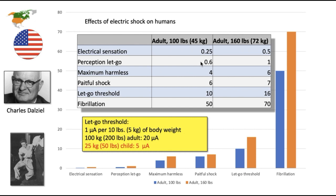Perception let go, basically your instinctual desire to let go or just step away from the thing shocking you, was 0.6 and 1 milliamp respectively. Maximum harmless barrier was 4 to 6. And coincidentally, that's the current value of a ground fault current allowed on the US-made GFCI devices.